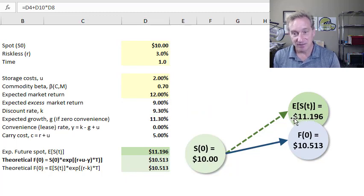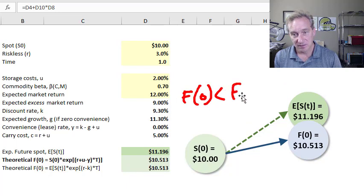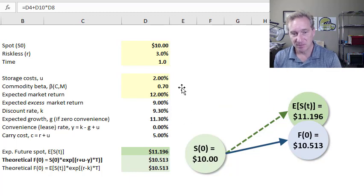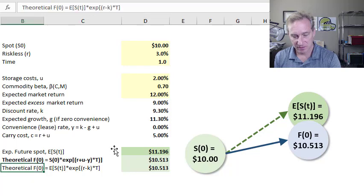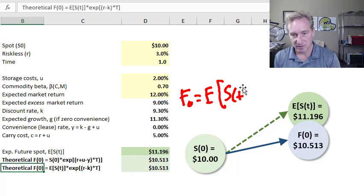And so what we have is what is expected in the model of the theory of normal backwardation. We have a forward price that is less than the expected future spot price. In fact, we can be deliberate about their relationship, which I have put in a final row here.